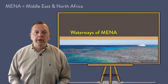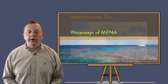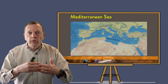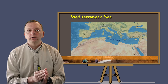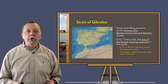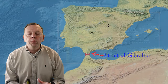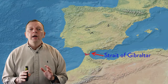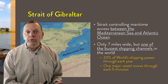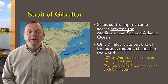Before we talk about the landforms of the region, let's look at the water that surrounds the Middle East and North Africa. The Mediterranean Sea lies off the north coast of Africa and off the east coast of the Levant. At the western end of the Mediterranean Sea, we find the Strait of Gibraltar, which connects the Mediterranean Sea to the Atlantic Ocean. This choke point is only seven miles wide, but is one of the busiest shipping lanes in the world, with 20% of the world's shipping passing through the strait each year — a major ship moves through every five minutes.